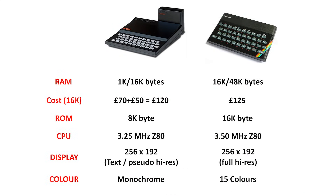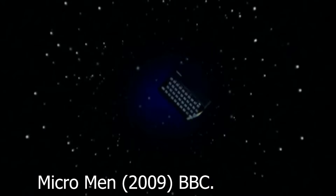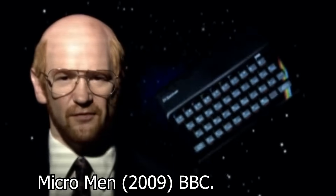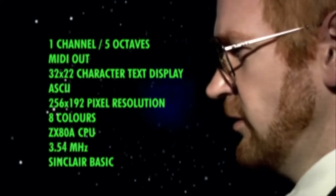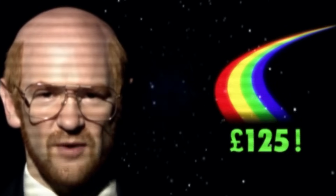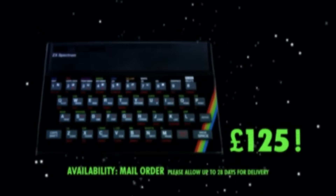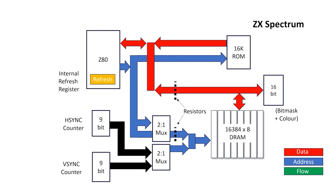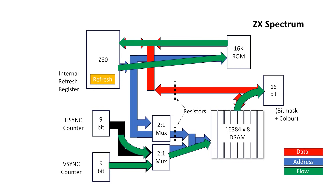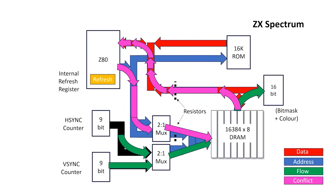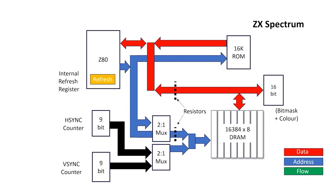In the last video, we went over the differences between the ZX81 and the ZX Spectrum, and we came up with this overall block diagram. In the Spectrum, the Z80 has direct access to the ROM, but it has to share access to the DRAM with the video circuit, which means there can be conflict between the CPU and video access to the memory. The video access is prioritized, so we don't get snow or streaks on the screen. In the inactive part of the display, the Z80 has unfettered access to the DRAM, but in the active area, the Sinclair engineers came up with an ingenious method of sharing the DRAM.